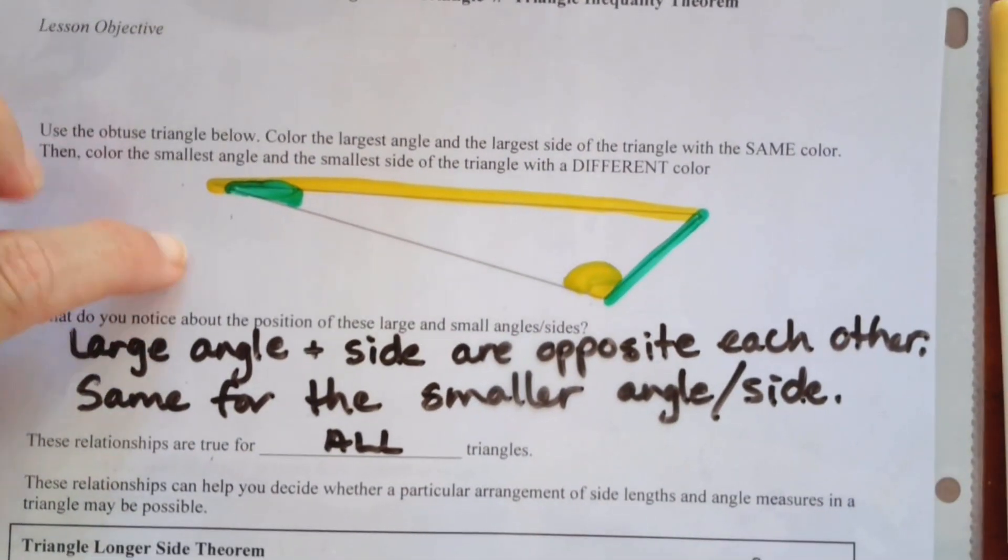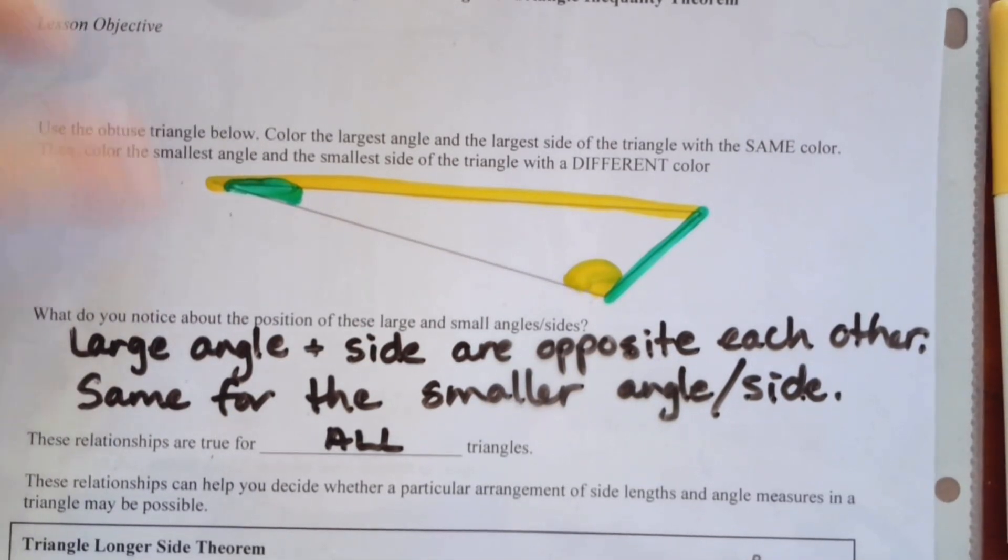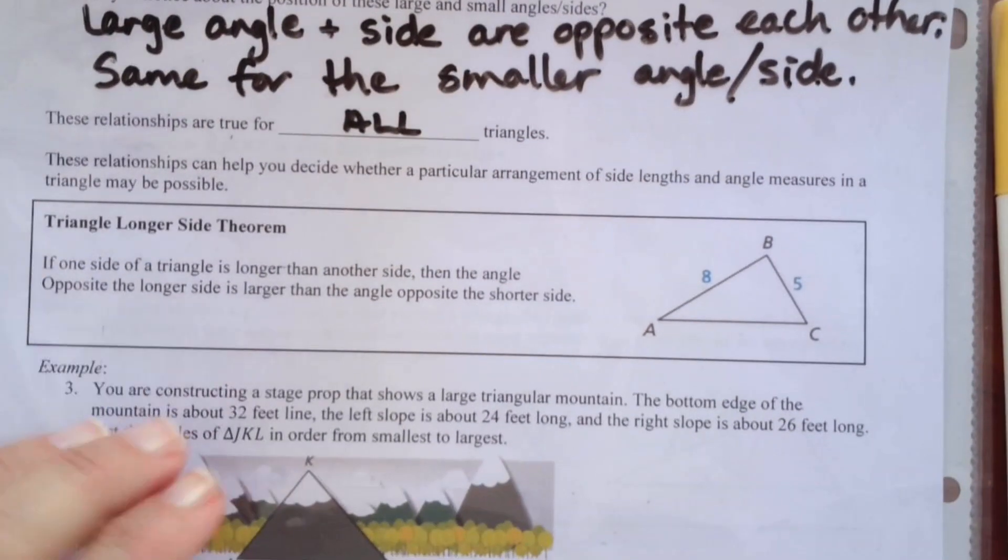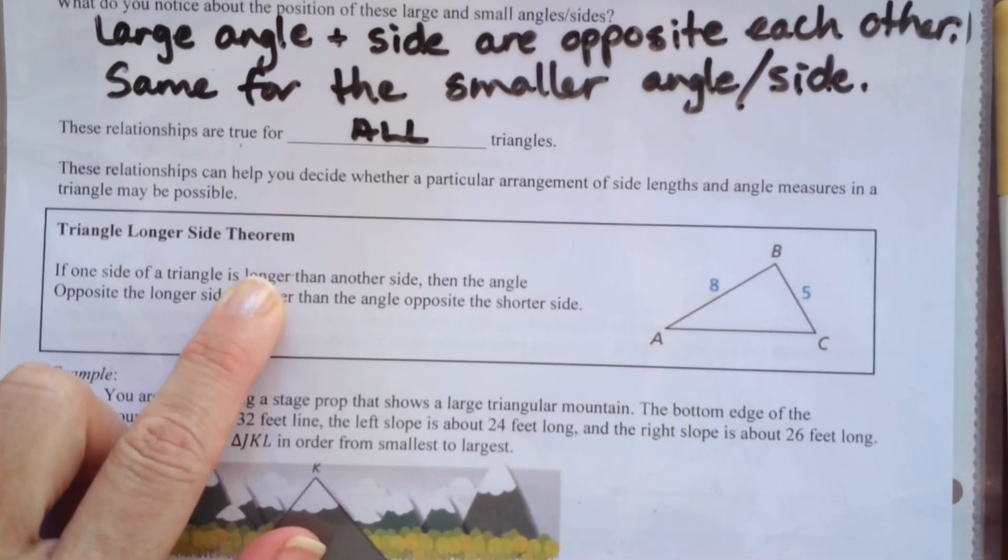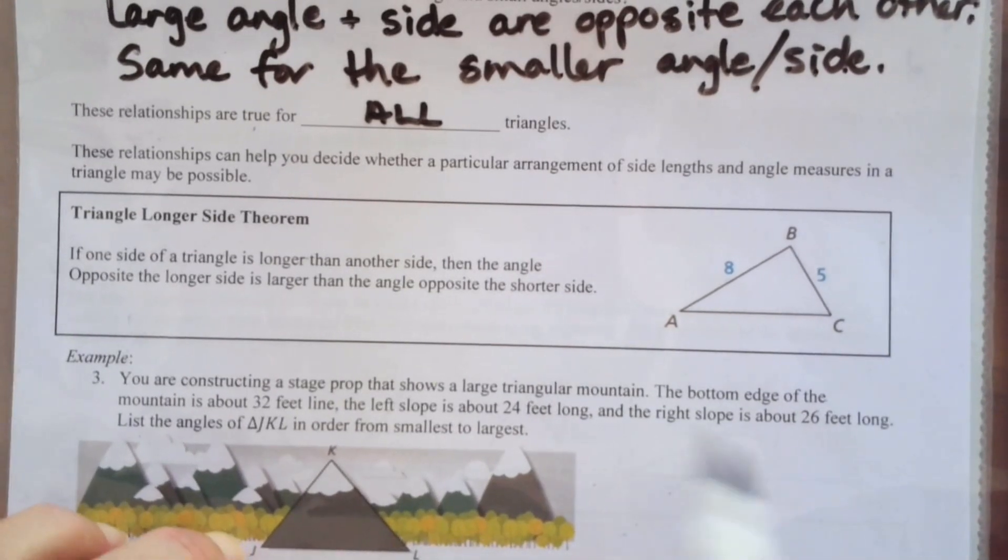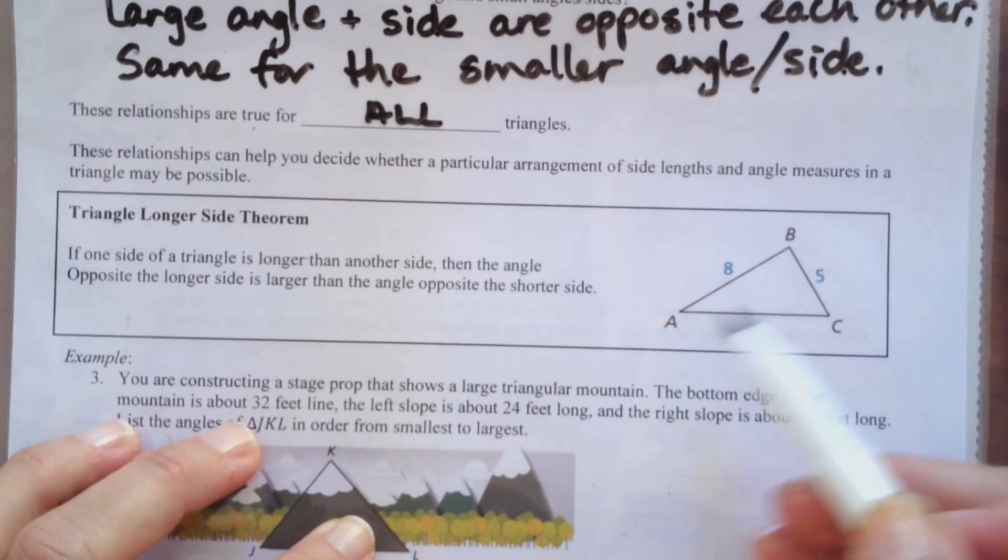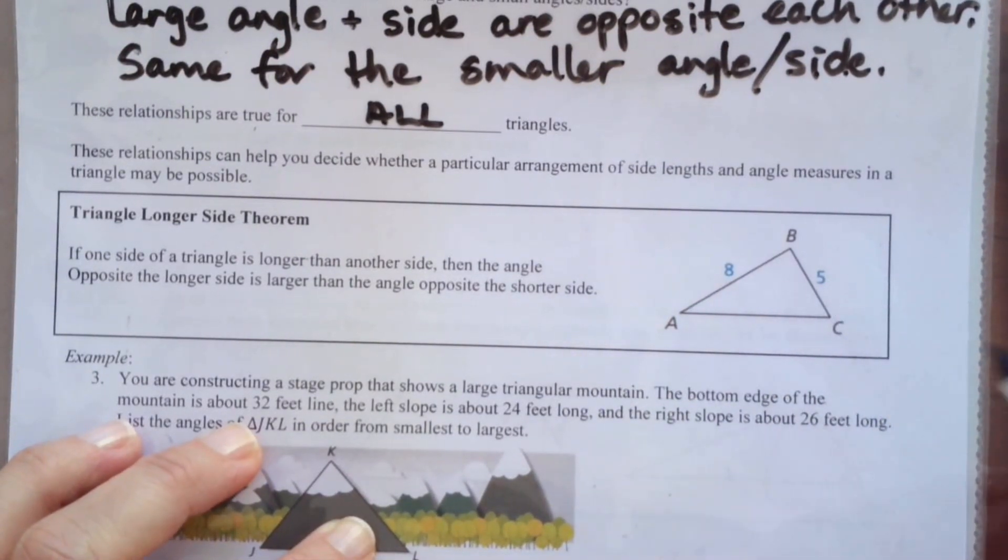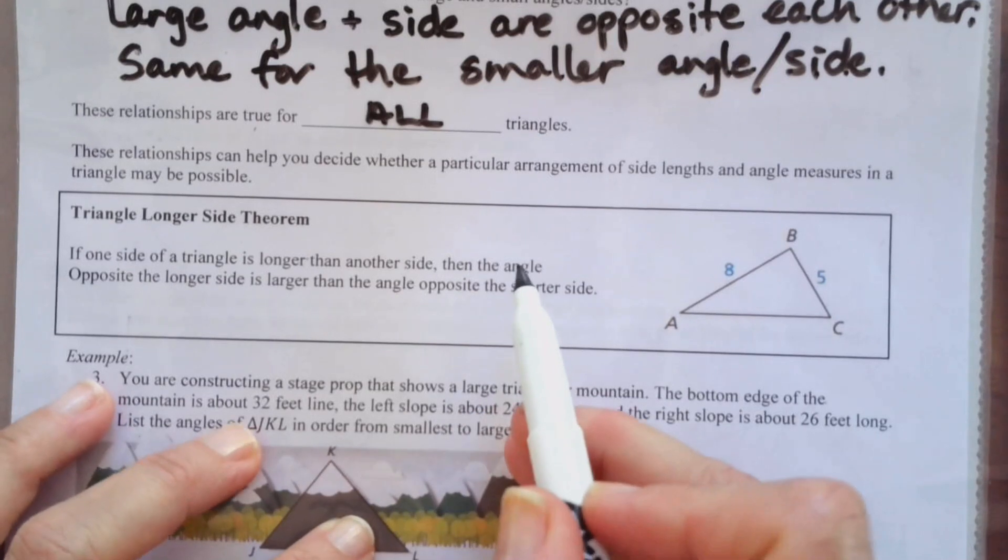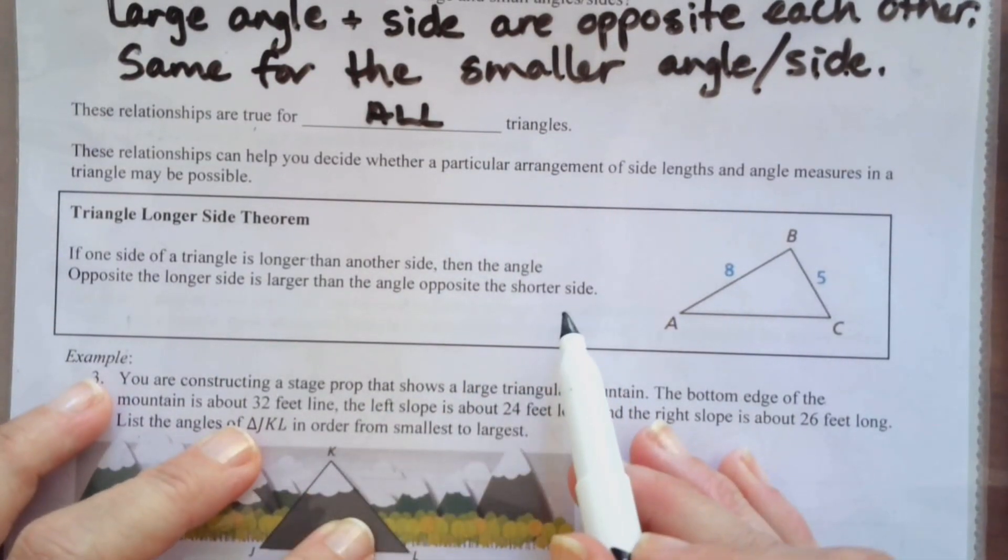And so we can take this relationship, which is always, always true. And we're going to make two theorems. One is called the longer side theorem. And the other one, as you can see down here, is called the larger angle theorem. So here's how it works. If one side of a triangle is longer than another side, which here you can see that AB is longer than BC, right? This is 8 and that's 5. Then the angle opposite the longer side is larger than the angle opposite the shorter side.